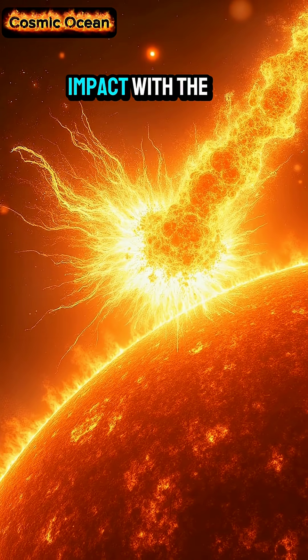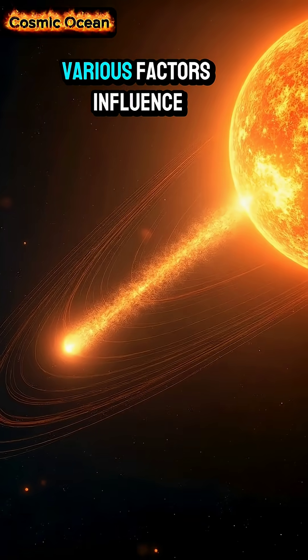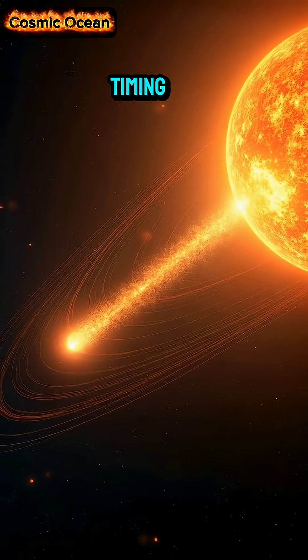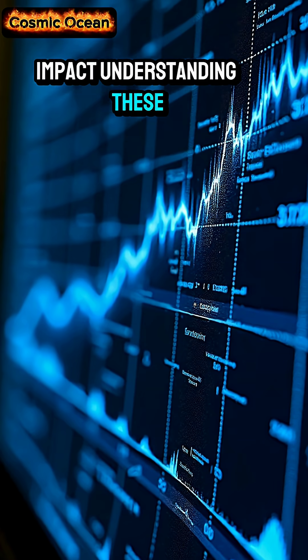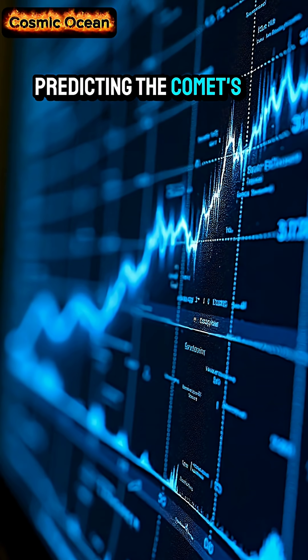The comet's path could lead to a direct impact with the sun's surface. Various factors influence the likelihood and timing of this potential impact. Understanding these factors is key to predicting the comet's future movement.